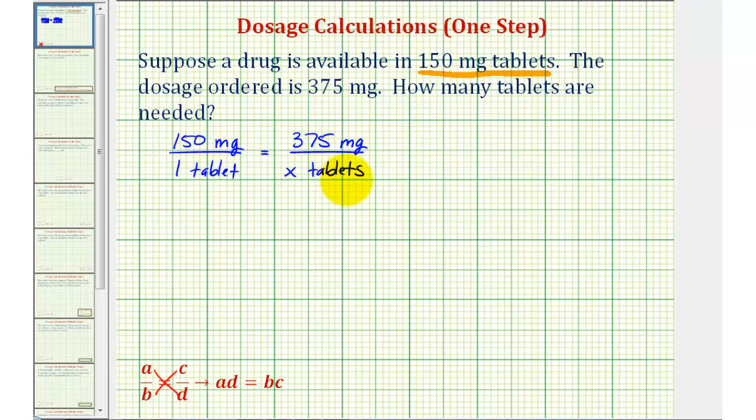And before we cross multiply, it's important to recognize that we have the same units in the numerators, or on top, and those are both milligrams, and the same units on the bottom, or in the denominators. They are both tablets. If these weren't the same, we'd have to perform an additional conversion.